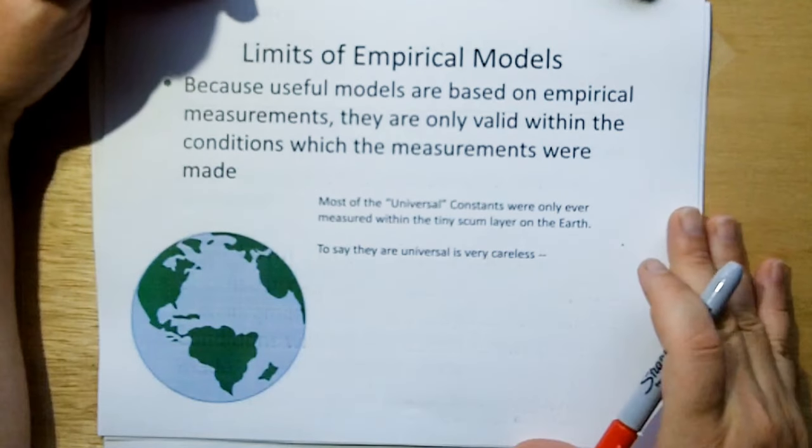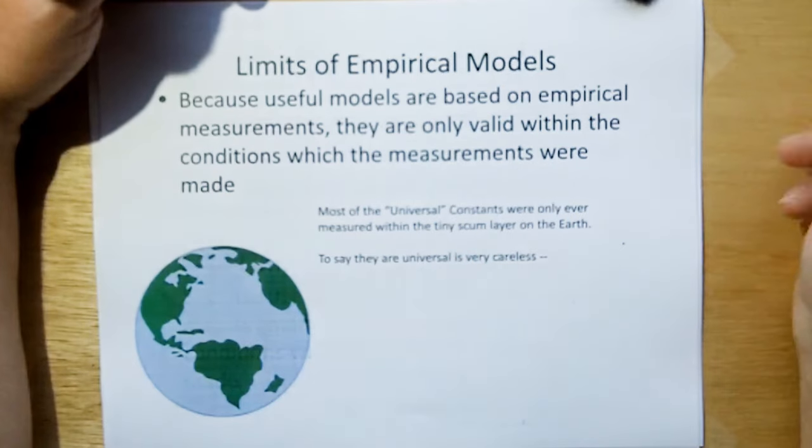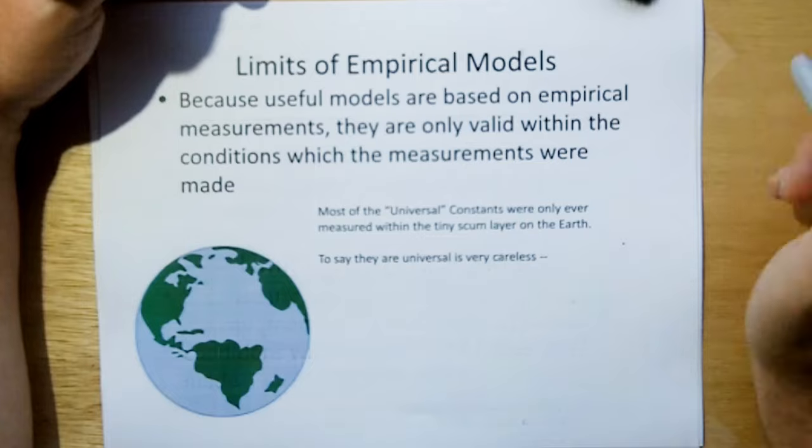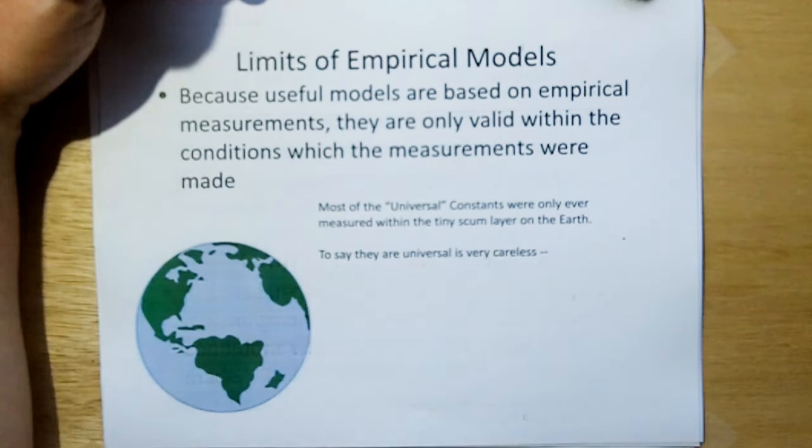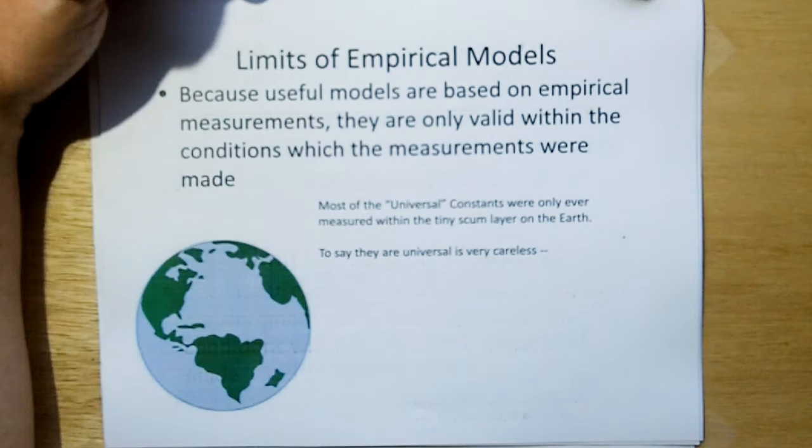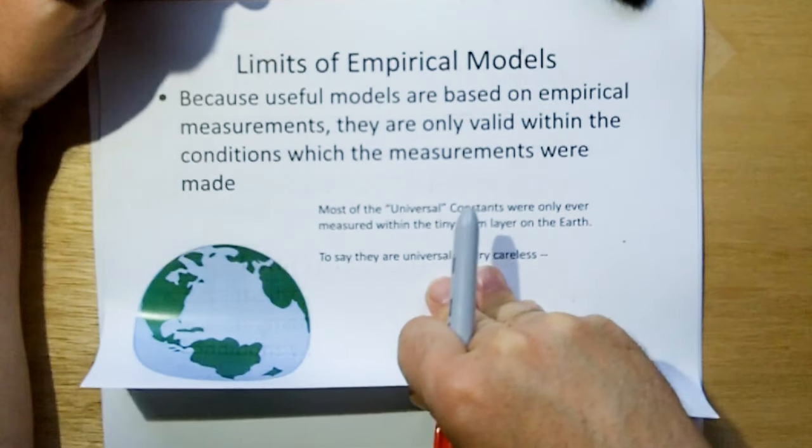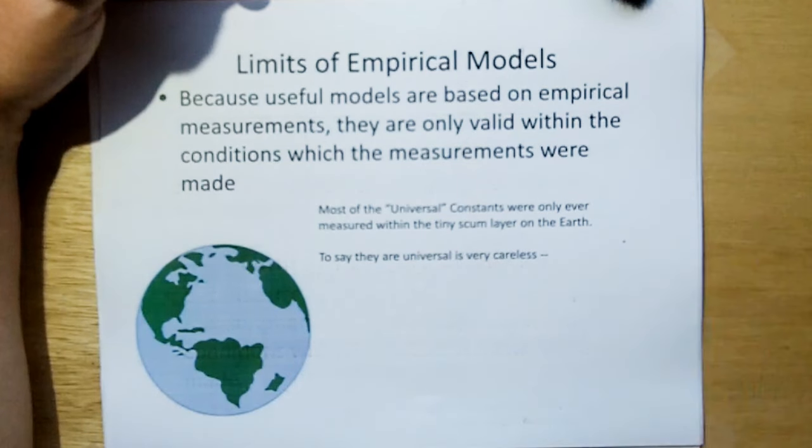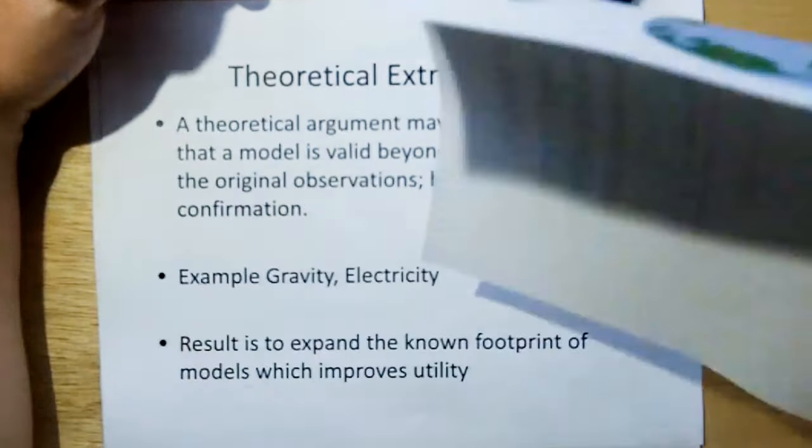But there's a limit on empirical models. Because these models are based on empirical measurements, they're only valid within the conditions in which the measurements were made. And like most of the universal constants were only ever measured within the tiny scum layer on the surface of the earth. So to say that the speed of light is a universal constant is pretty careless. It might be true, but it's very careless unless we really go somewhere else and measure it.